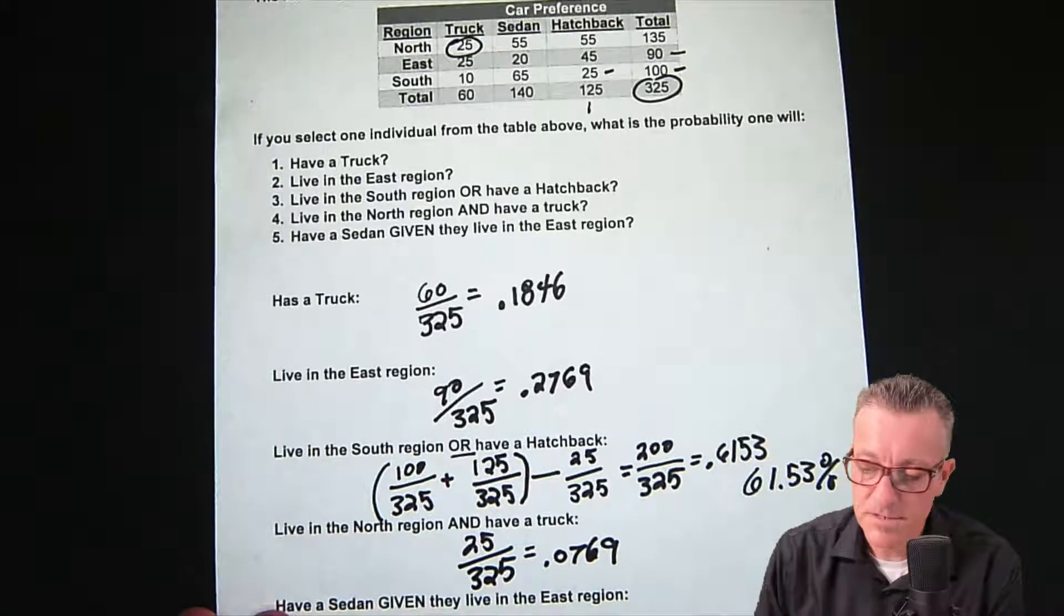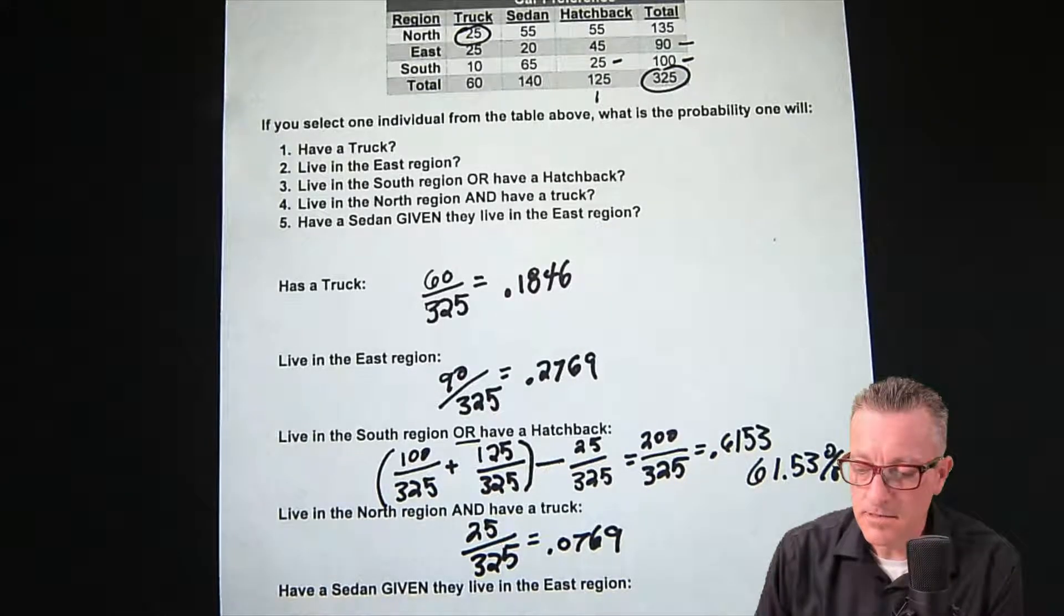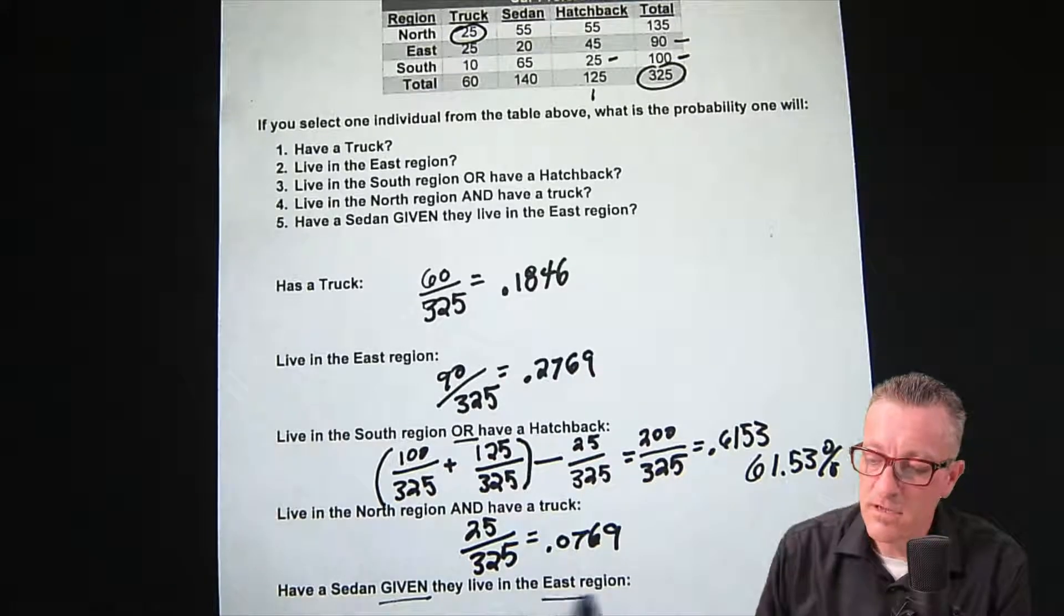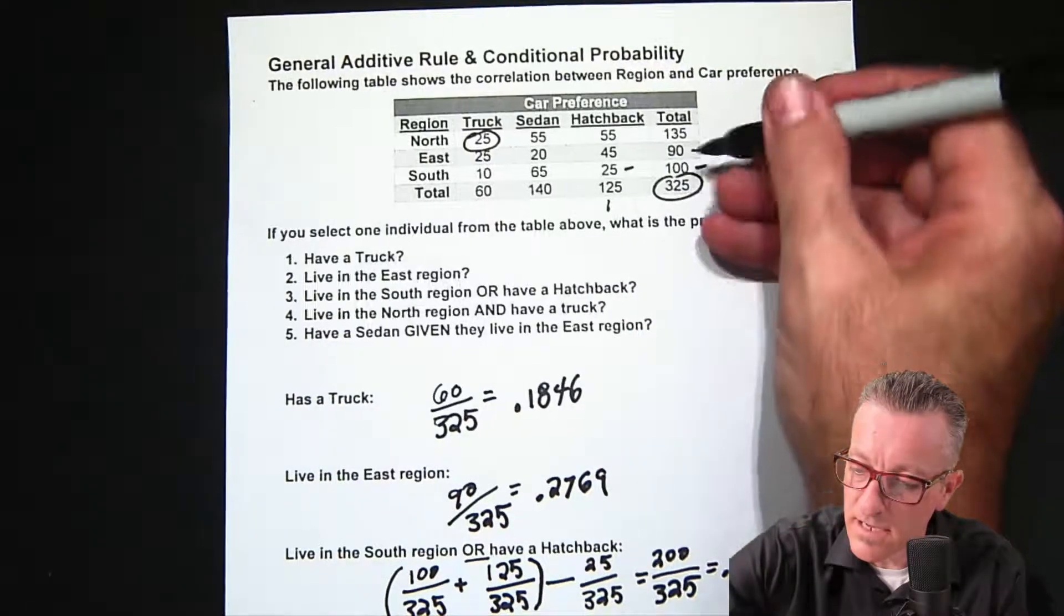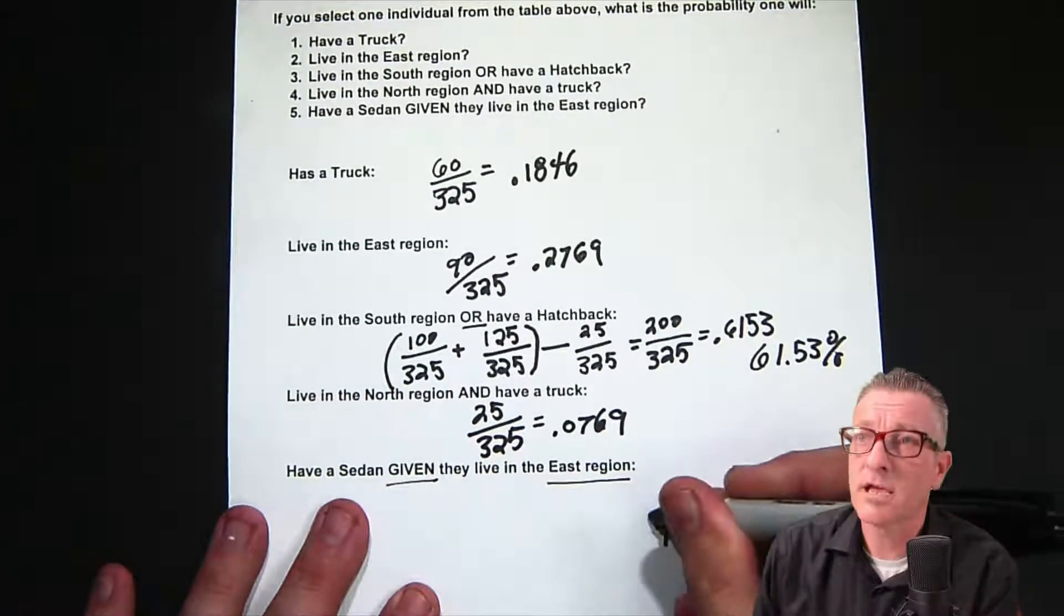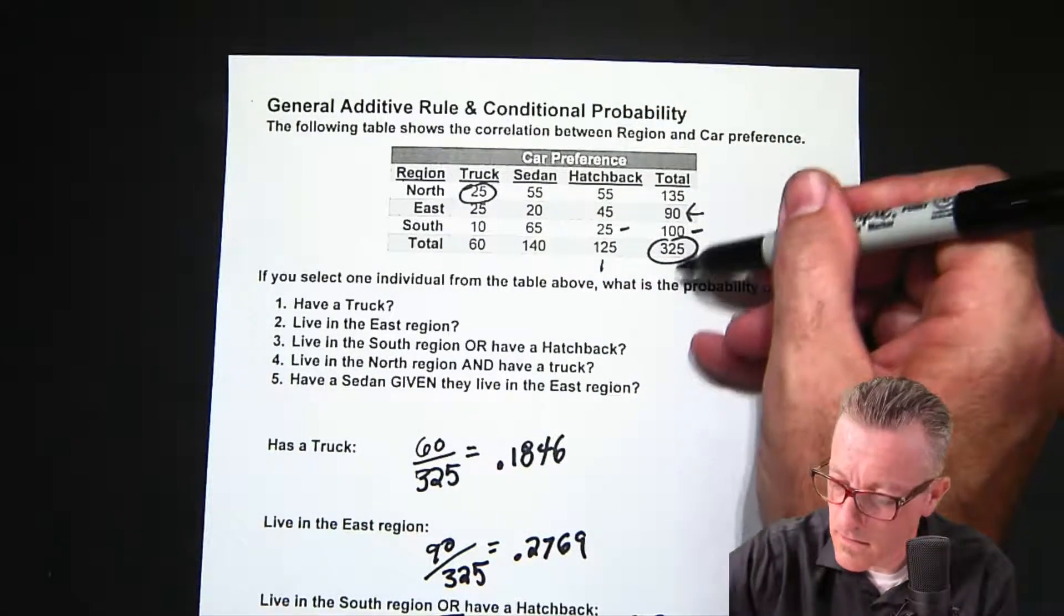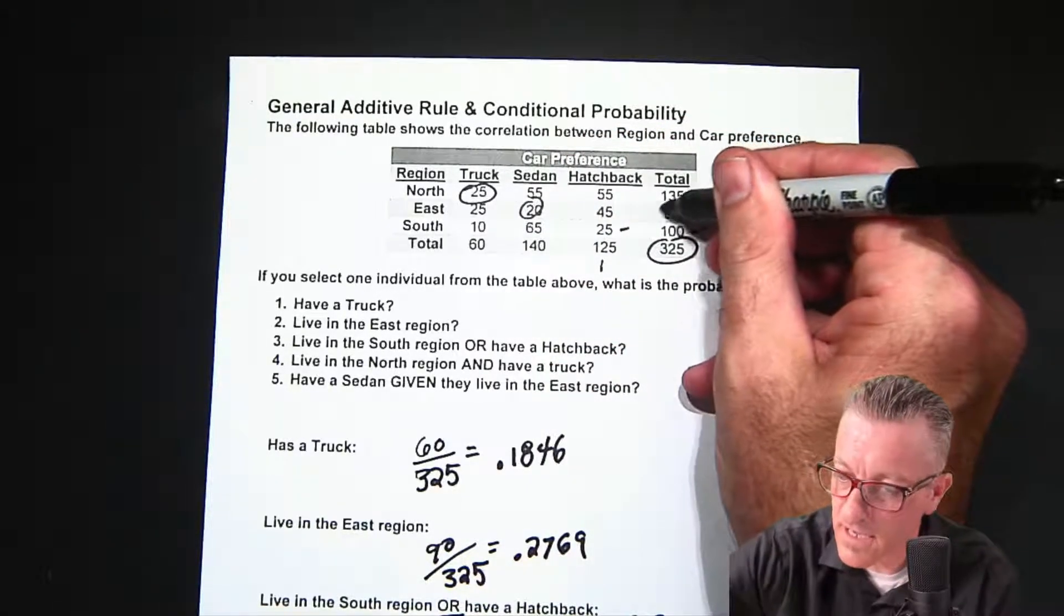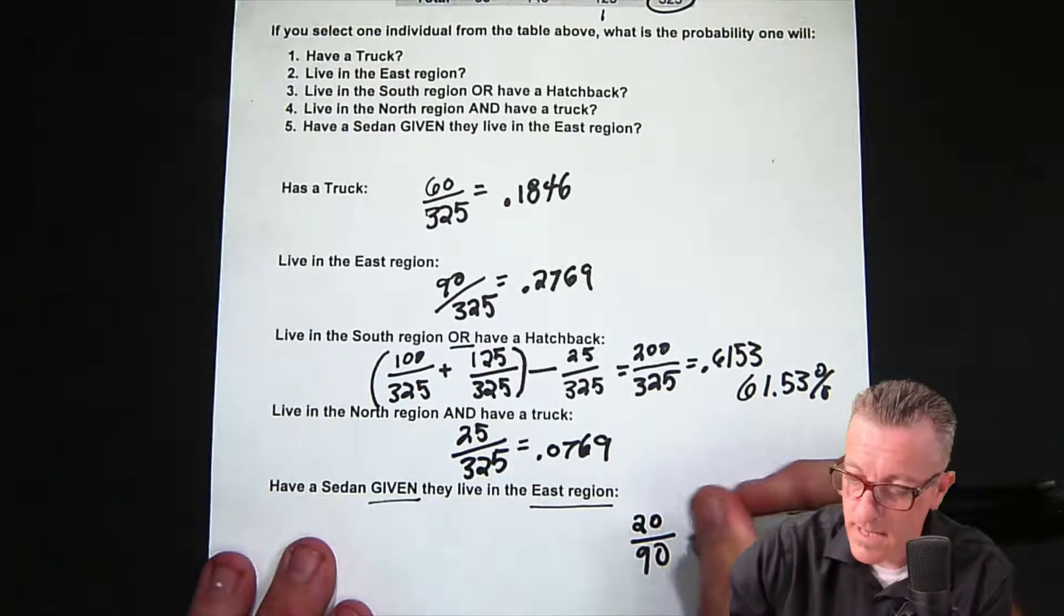Given - now whenever the term given is used, it means we have a restricted sample space or a restricted selection set. In this case it's always after the word given, so in this case the East region. The total for the East region is going to be our denominator on this one, so East, and that is 90. So we have 90, making sure I'm on the page here, so our denominator is 90. Then we go back and we say have a sedan. So the people who have a sedan - East people who have a sedan are 20. So it's 20 within the 90, so 20 is our numerator, our denominator's 90, and if we work that out it ends up being 0.2222 or about 22.22%.